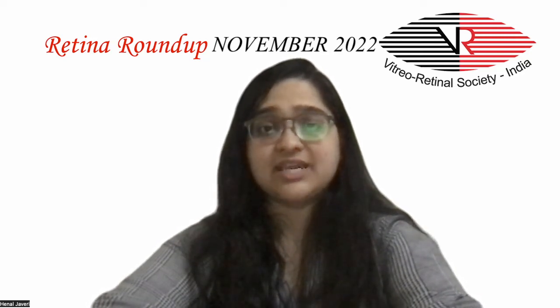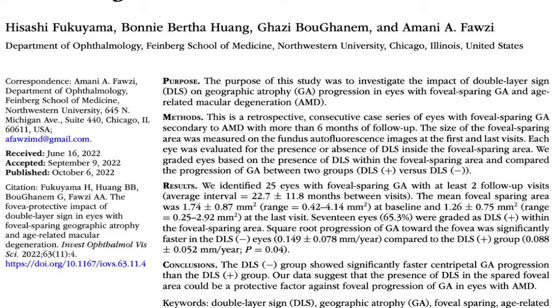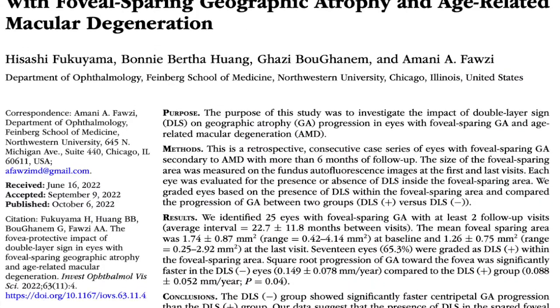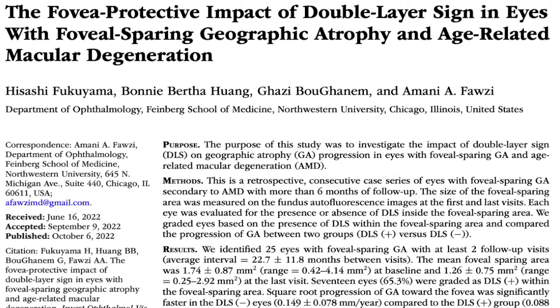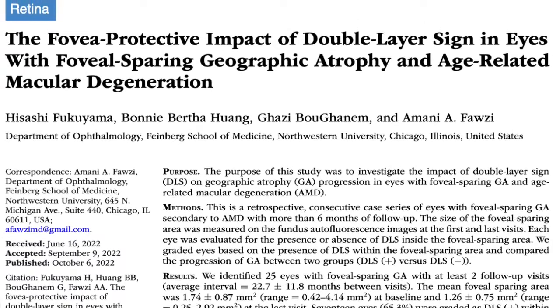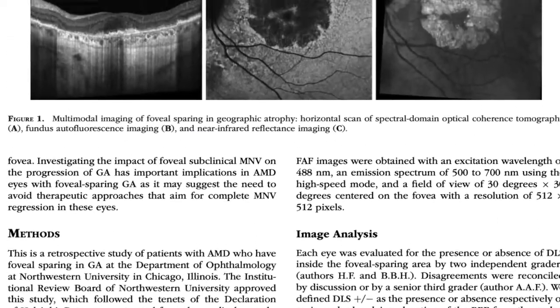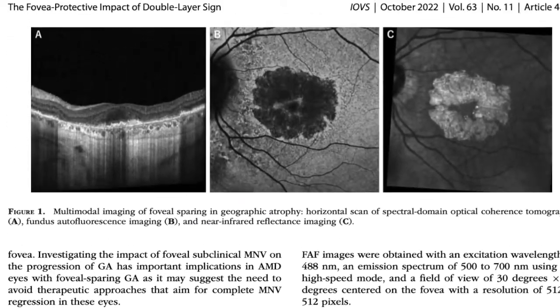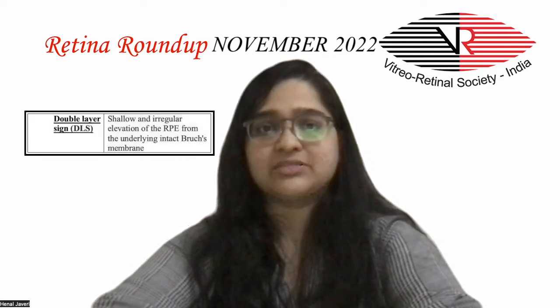The second study is a retrospective case series of 25 eyes investigating the fovea-protective impact of the double-layer sign in eyes with fovea-sparing geographic atrophy and age-related macular degeneration. The size of the foveal-sparing area was measured on fundus autofluorescence images at the first and last visits, and each eye was divided into two groups according to the presence or absence of DLS inside the foveal-sparing area.